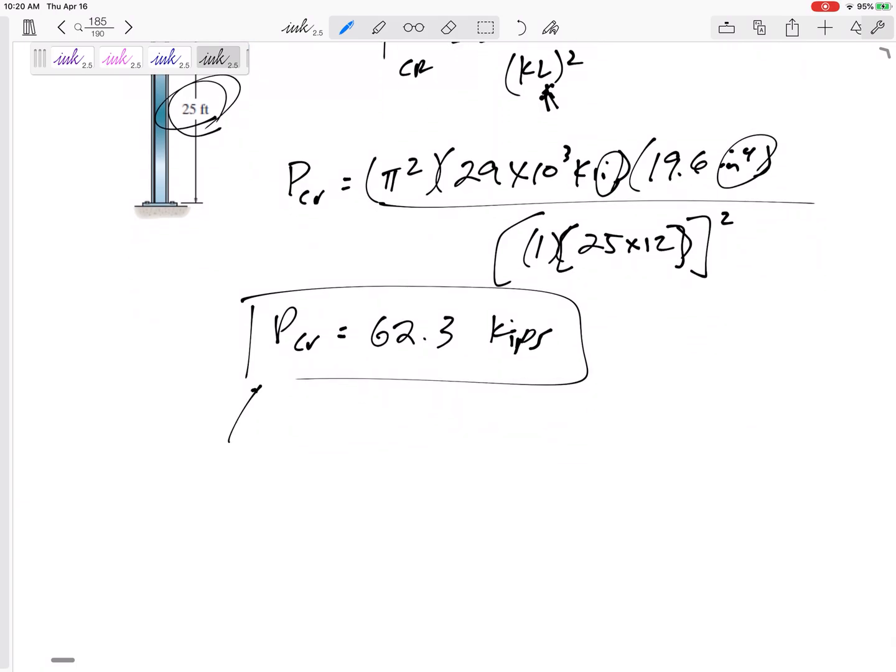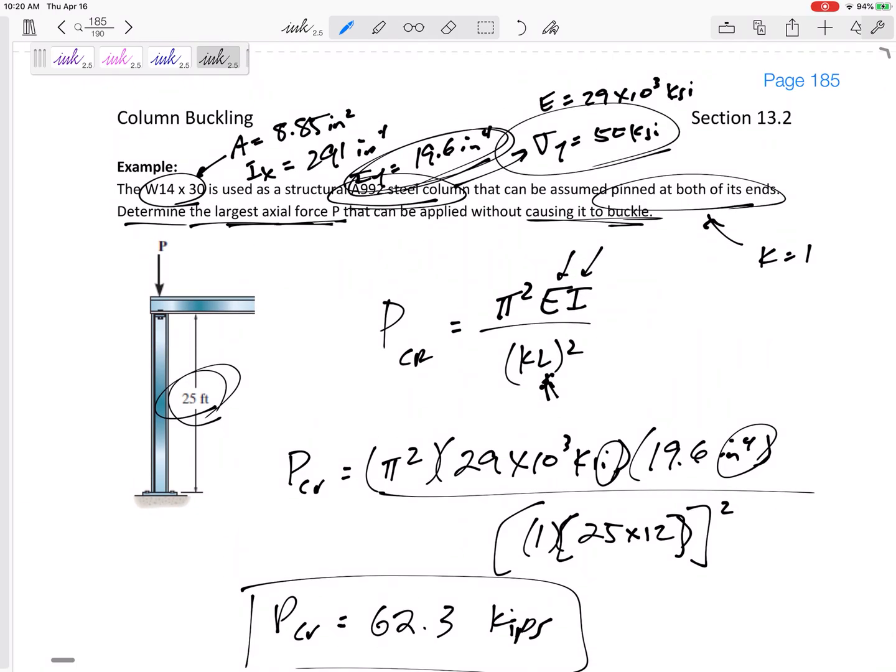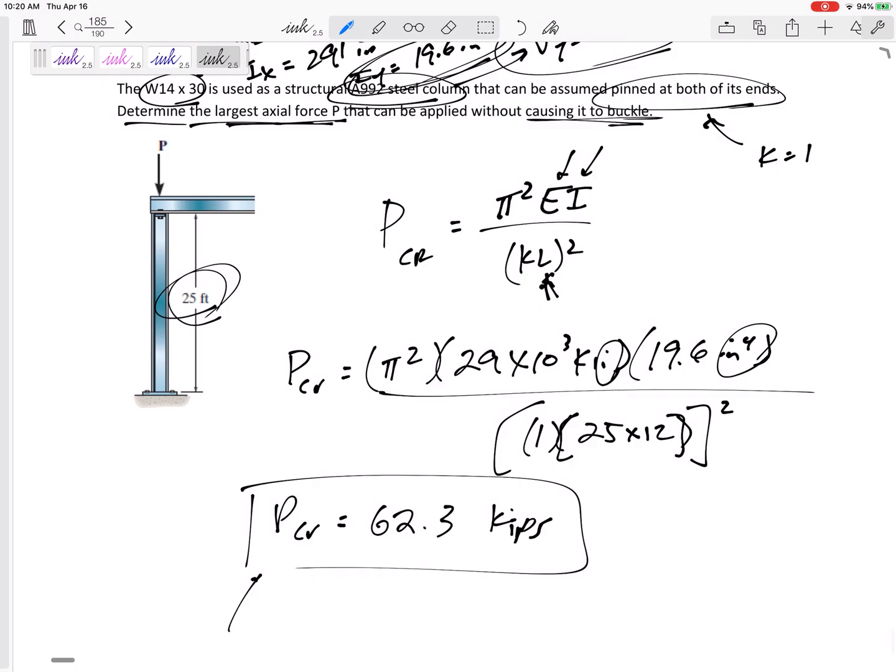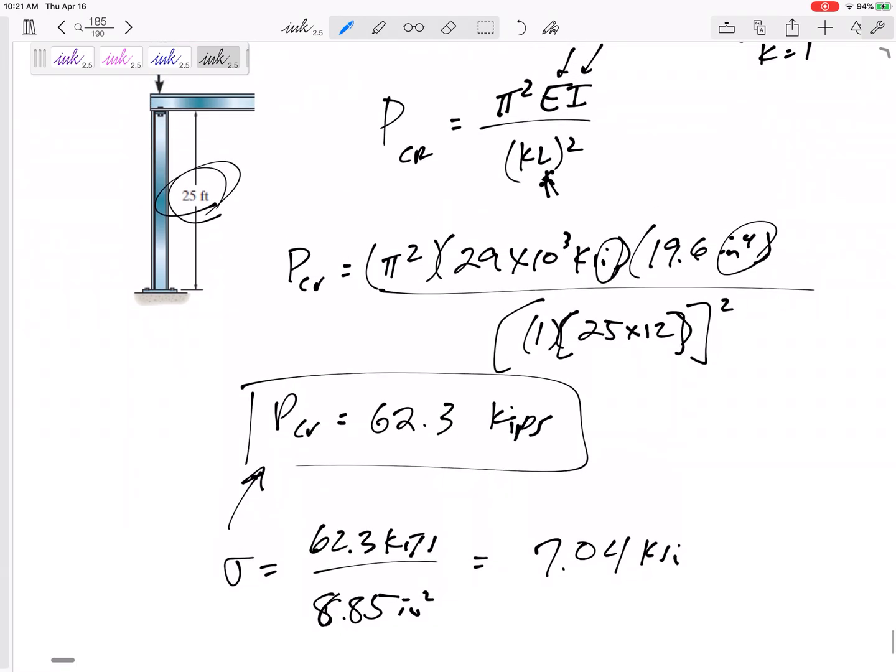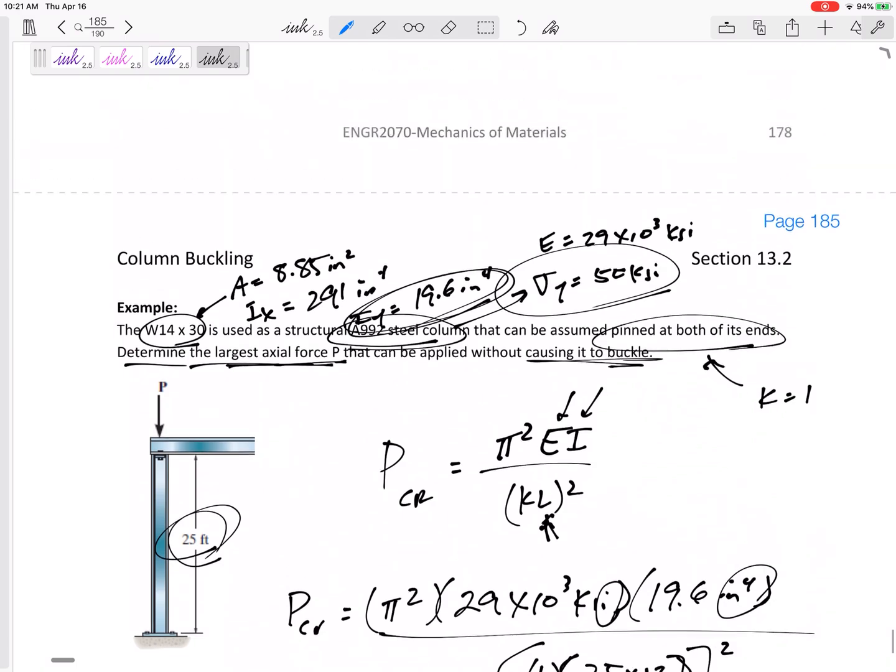Now, let's make sure that it doesn't yield. All right, it didn't ask, and sometimes I'll ask, make sure it doesn't yield first. What stress is this? The stress would be 62.3 kips over the cross-sectional area, 8.85 inches squared.